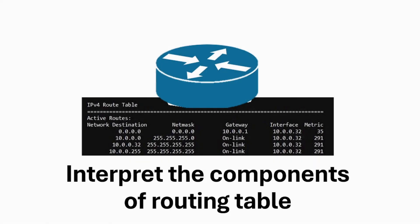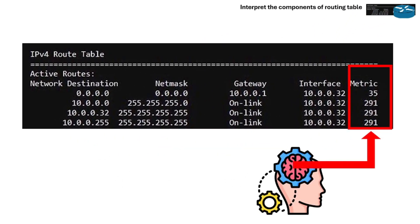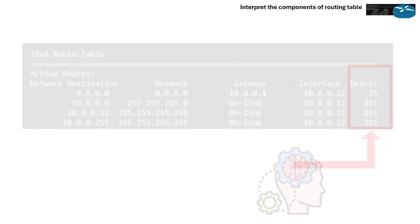Section 3.1 is about interpreting the components of the routing table. Understanding how to read and interpret the routing table is essential for troubleshooting and ensuring correct data forwarding in IP networks. Here's a breakdown of each component you need to know.